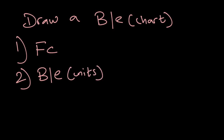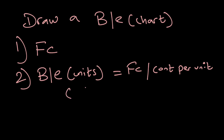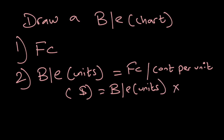For breakeven in dollar terms, take your breakeven in units and multiply it by the selling price per unit. Thirdly, you also need to know your actual units or output.